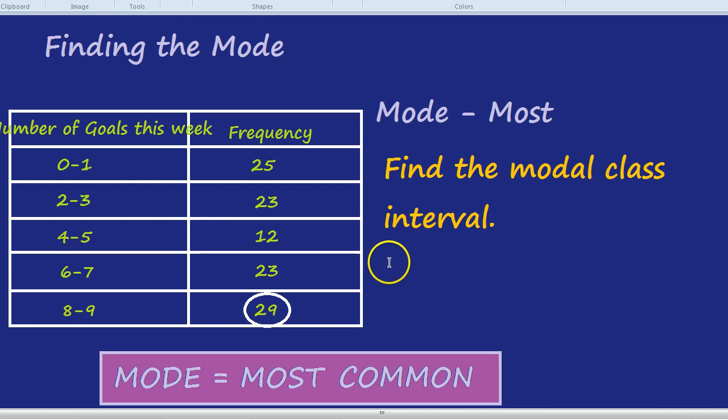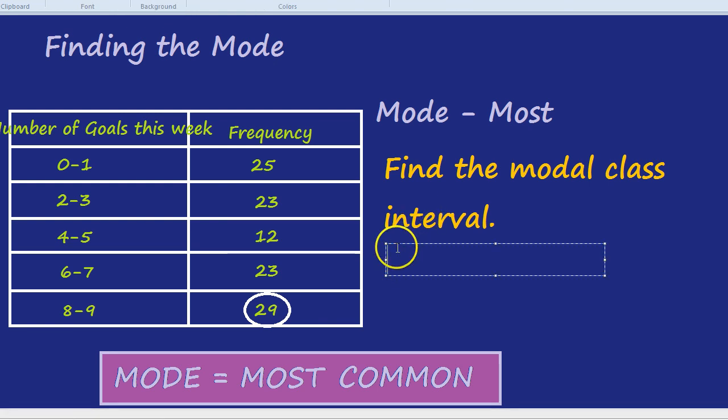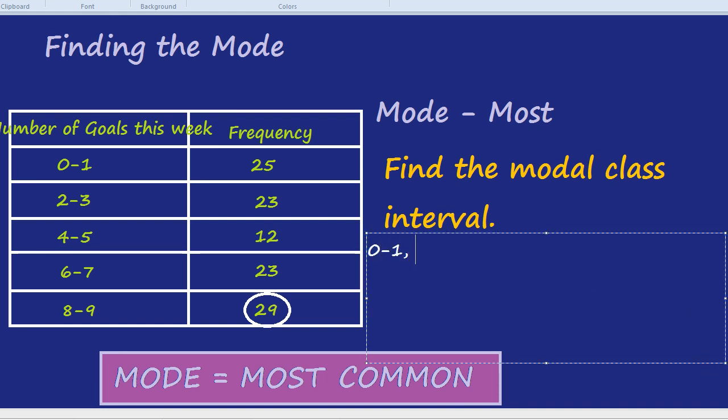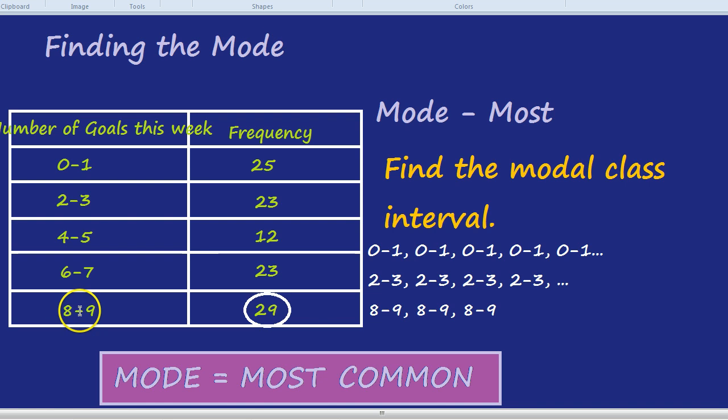It would be a bit like if I drew out a long table showing 0 to 1 repeated 25 times, then 2 to 3 repeated 23 times, and then 8 to 9 repeated the most times. Just like 11 was the mode in the previous question because it came up 3 times whereas 17 only came up 2 times, 8 to 9 is the modal class interval because it comes up 29 times.